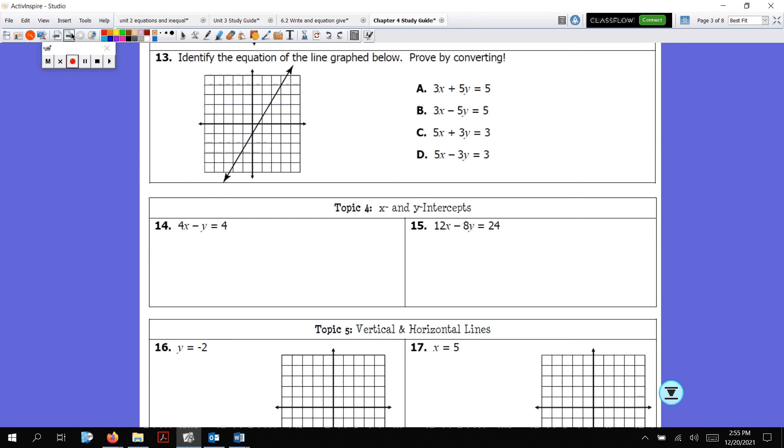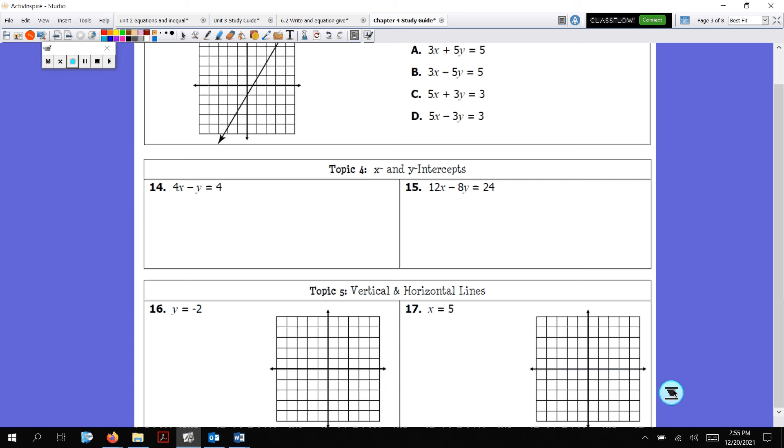Moving on to topic 4. We are talking about x and y-intercepts. An x-intercept, for the x-intercept, you make y equal to 0. For the y-intercept, you make x equal to 0. For number 14, for the x-intercept, I'm going to set y equal to 0, so I have 4x minus 0 equals 4. Solve for x. Then do it again for the y-intercept. The y-intercept is now 4 times 0 minus y equals 4. And you want to solve for y. You're going to do the same thing for number 15.